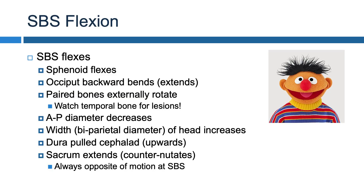The first motion at the SBS that we'll talk about is SBS flexion. SBS flexion occurs when the sphenoid bone flexes, and the occiput backwards bends, or extends. When all of these motions are occurring at the SBS, it causes the paired bones of the skull — the bones in the skull that there are two of, like the parietal bone and the temporal bone — to externally rotate. A relatively high-yield topic to remember is that external rotation of the temporal bone for any reason is going to cause some sort of complication or lesion, likely of cranial nerve 8.